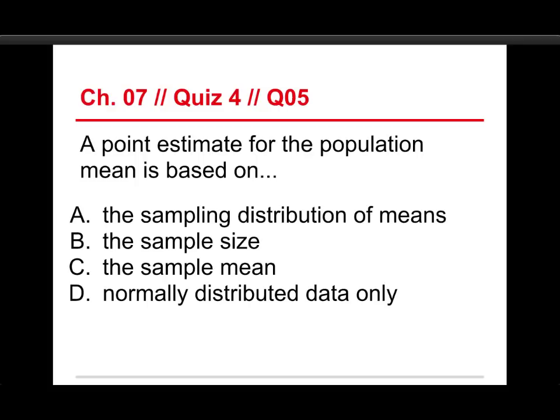The last question for the fourth quiz is: a point estimate for the population mean is based on what? The sampling distribution of means, the sample size, the sample mean, or normally distributed data only? Well, it's the sample mean, because the sample mean just, you know, you re-identify it as the point estimate for the population mean. The sampling distribution of means is something that the means go into, and if we were doing a confidence interval, then that's what we would use. But we're not doing a confidence interval. We're doing a point estimate. It's different. The sample size doesn't work into it. Normally distributed data are always nice to have, but the procedure works either way.